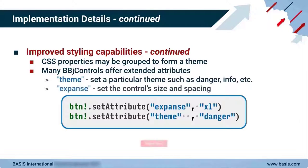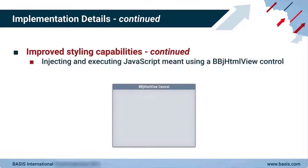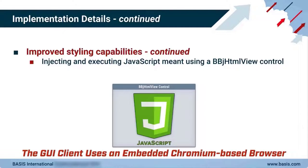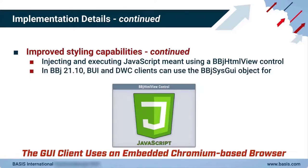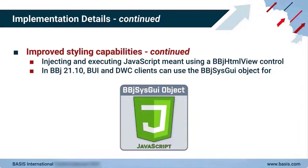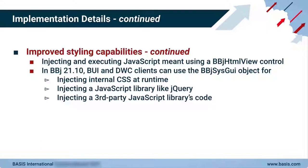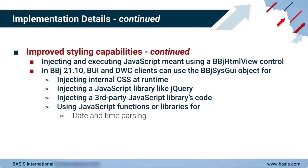Many of the BBJ controls in the DWC also offer extended attributes which give us even more ways to influence a control. Attributes such as theme and expanse let us apply predetermined types to BBJ buttons. Up until now, if you ever wanted to inject and execute JavaScript code you would need to include a BBJ HTML view control in your application. But as of BBJ 21.10, the BUI and DWC clients allow you to do so via the BBJ sys-gui object, because they are already running in a browser. This enables injecting CSS at runtime, injecting JavaScript libraries like jQuery, or using JavaScript functions for date and time parsing, color conversions, and more.